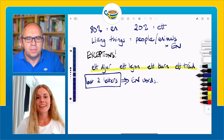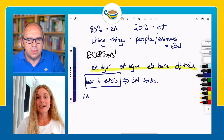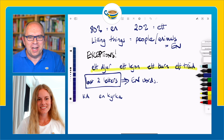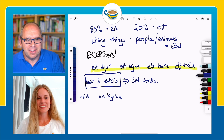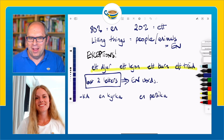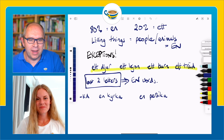We start off with the combination K-A. For example, we have en kyrka — that means 'a church.' The building is not necessarily a living thing, but this word is an n-word because it ends in -ka. We also have en persika — 'a peach.' Again, it ends in -ka, so we make it an n-word.